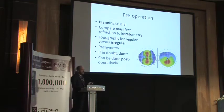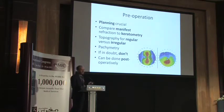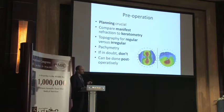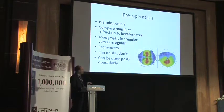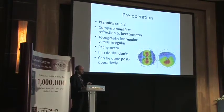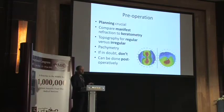Particularly with LRIs and toric IOLs, in the majority of cases for a cataract surgeon we are talking about regular astigmatism. You can see these two topographical images — on the left is regular with-the-rule astigmatism, and on the right this is more indicative of keratoconus, so you would not want to use LRIs casually in those patients.